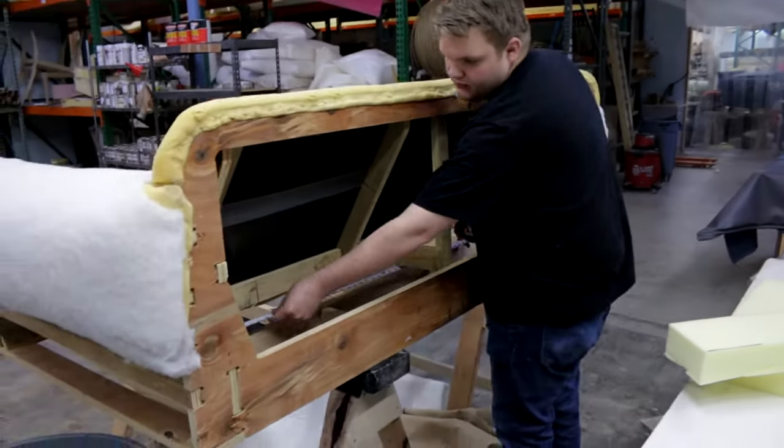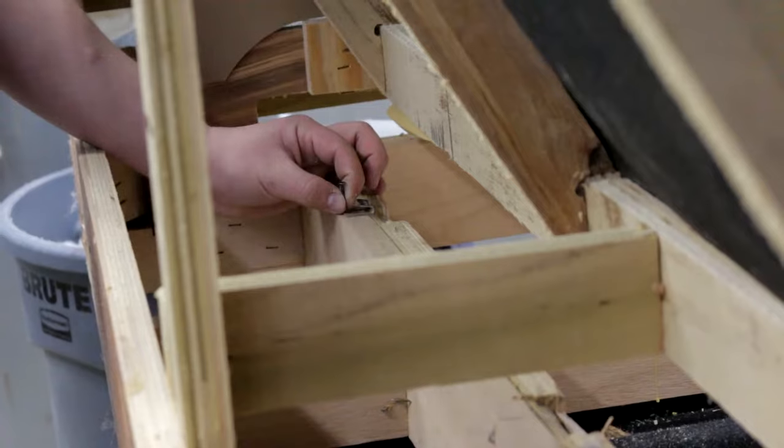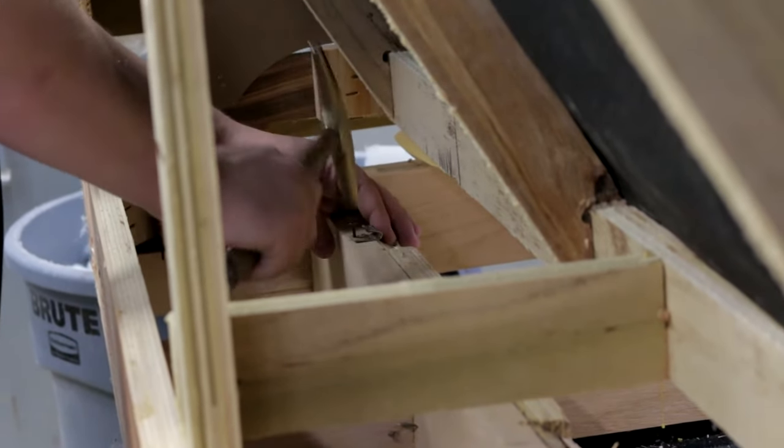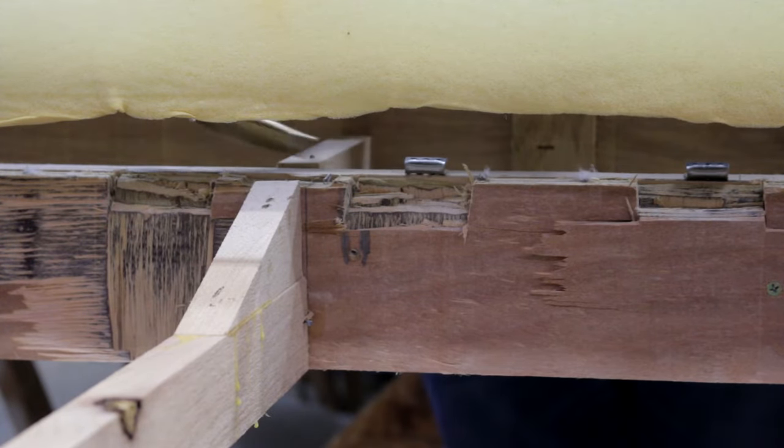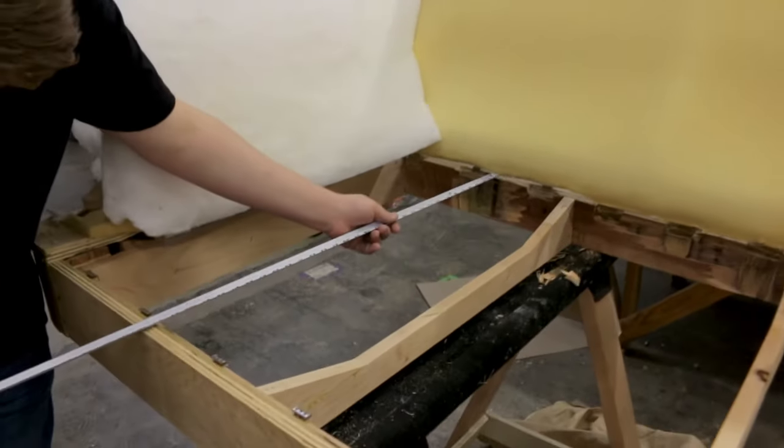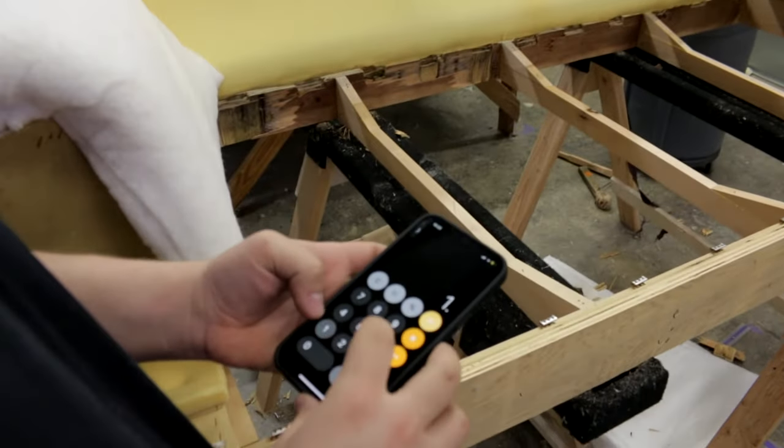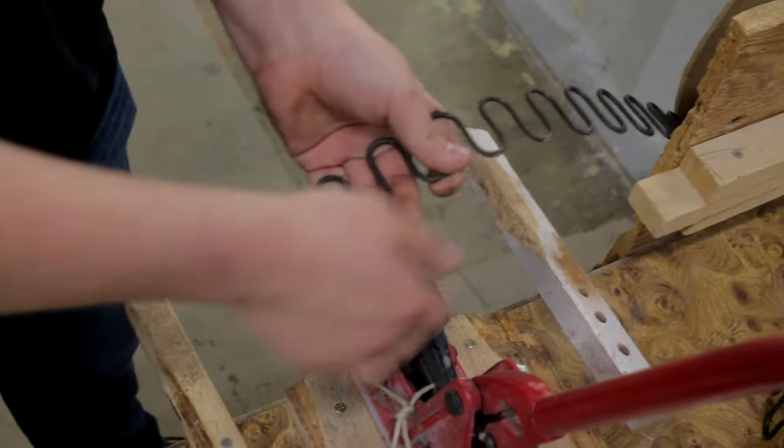I'll then repeat the process for the back of the piece, making sure that my measurements mirror exactly the ones from the front. Once all of my clips are in the right place, I'll measure the distance between the front and back clips. I'll take this distance and divide it by 1.65 and round up to the nearest half. This will tell us the best number of zigzags to cut on our springs.